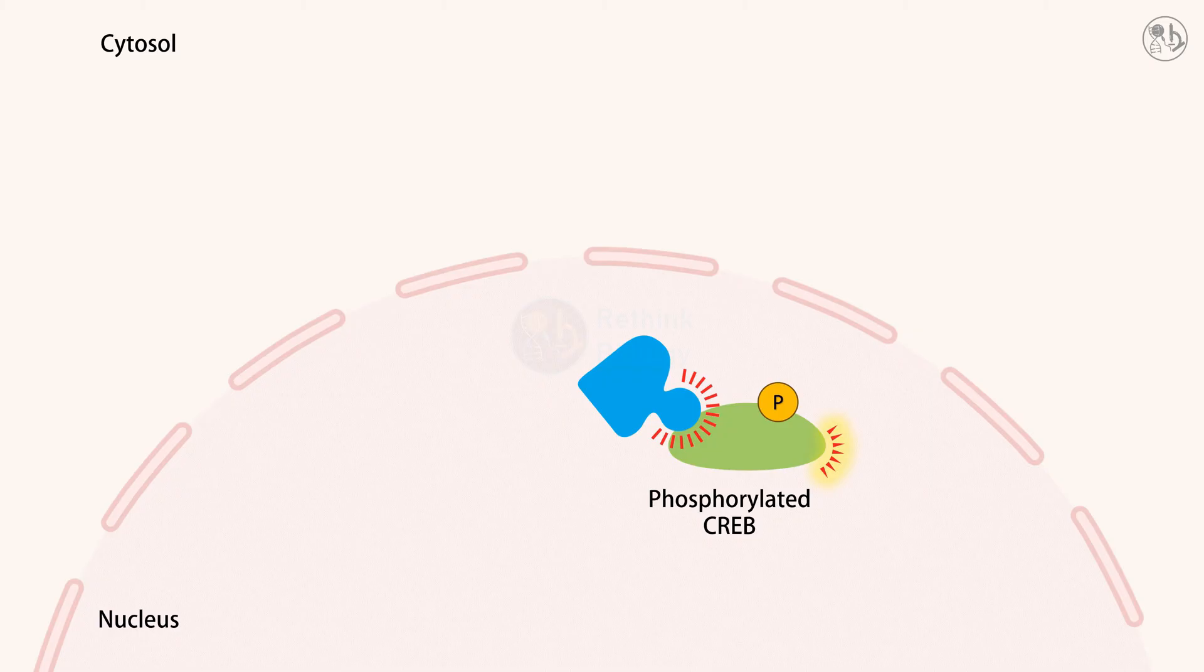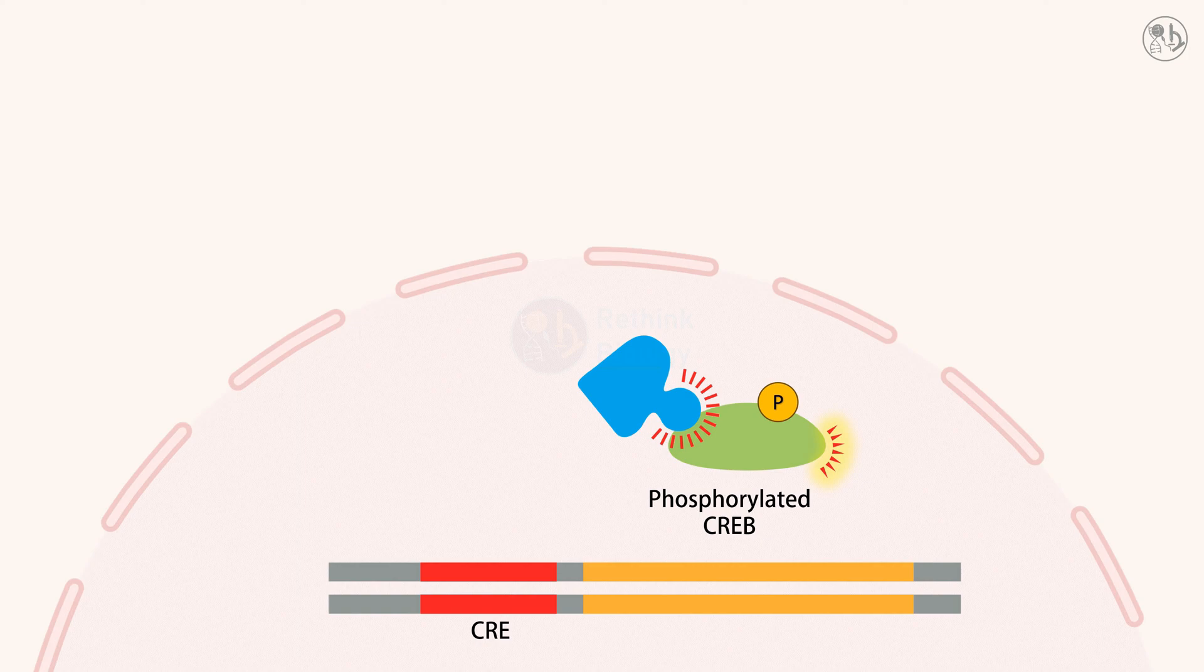CREB is a transcription factor which means it can bind to DNA and regulate gene expression. When PKA phosphorylates CREB, it activates its ability to bind to a specific DNA sequence called the CAMP response element or CRE.